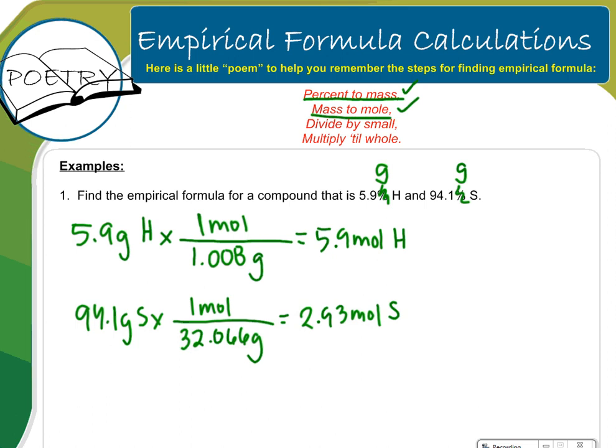Now I need to divide by small. So what do they mean by divide by small? That means literally, let's look at our numbers here. Which one's smaller? Hopefully you know 2.93 is smaller than 5.9. So I'm going to divide both of these numbers by 2.93. When I do this, I obviously get 1 on the last one on the bottom, which pertains to sulfur. And for hydrogen, this actually will come out to 2.